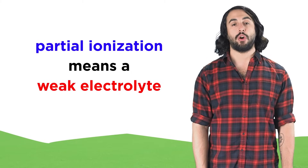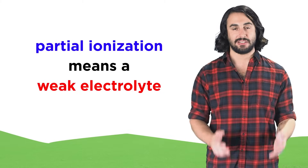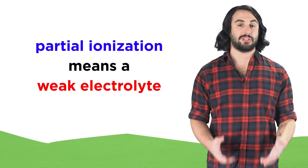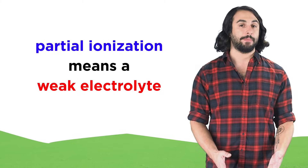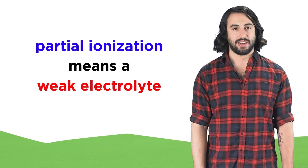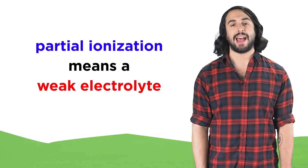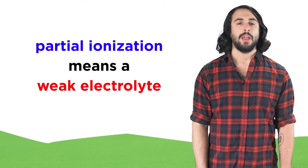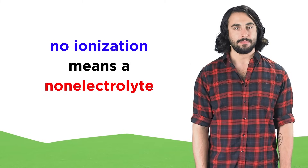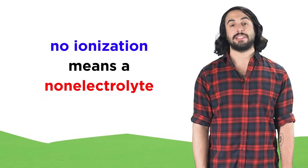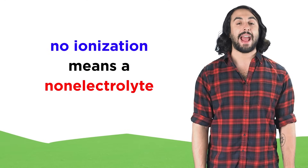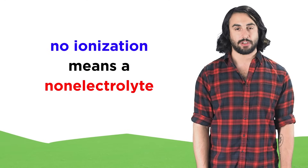If a substance only partially ionizes in solution, meaning some particles dissociate and some do not, this will be called a weak electrolyte, which will still conduct electricity, but not as well as a strong electrolyte. And a substance that does not dissociate at all will be a non-electrolyte.